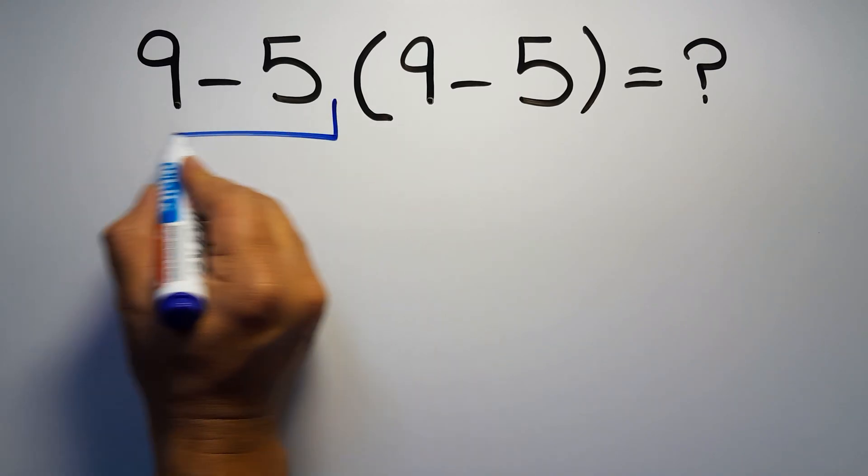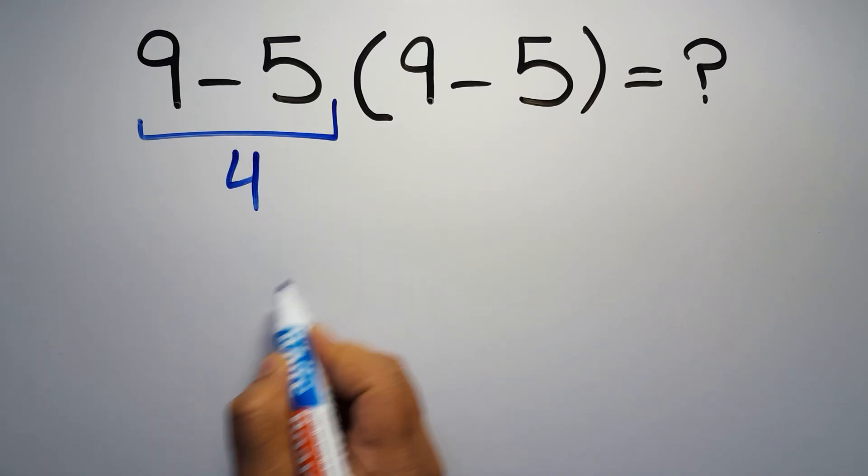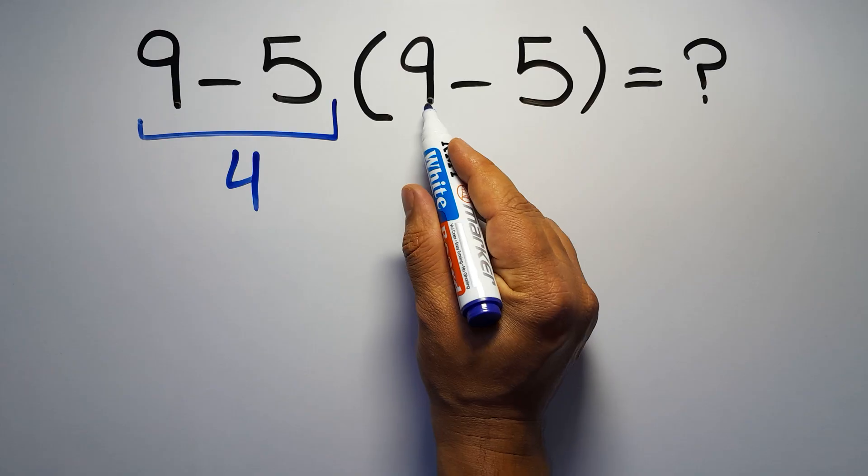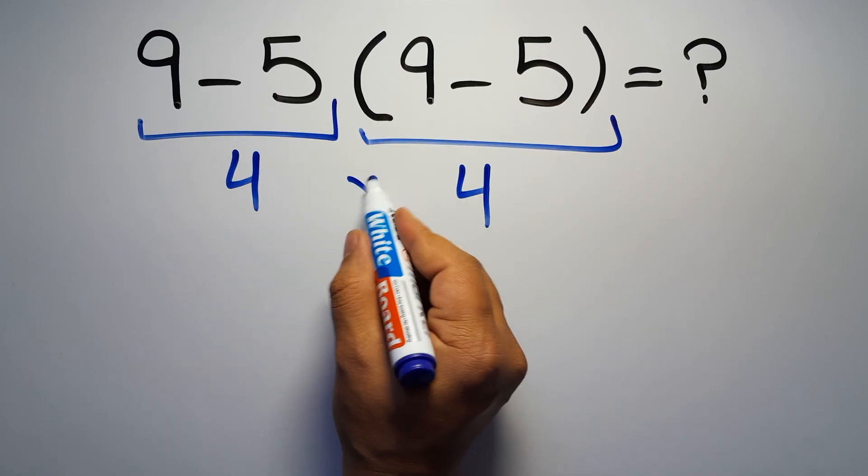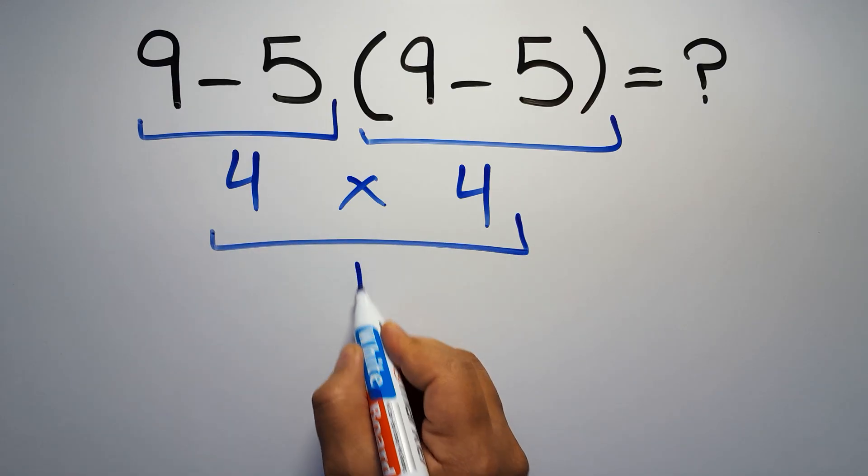9 minus 5 equals 4. And again here inside this parentheses we have 9 minus 5. So 4 times 4 equals 16.